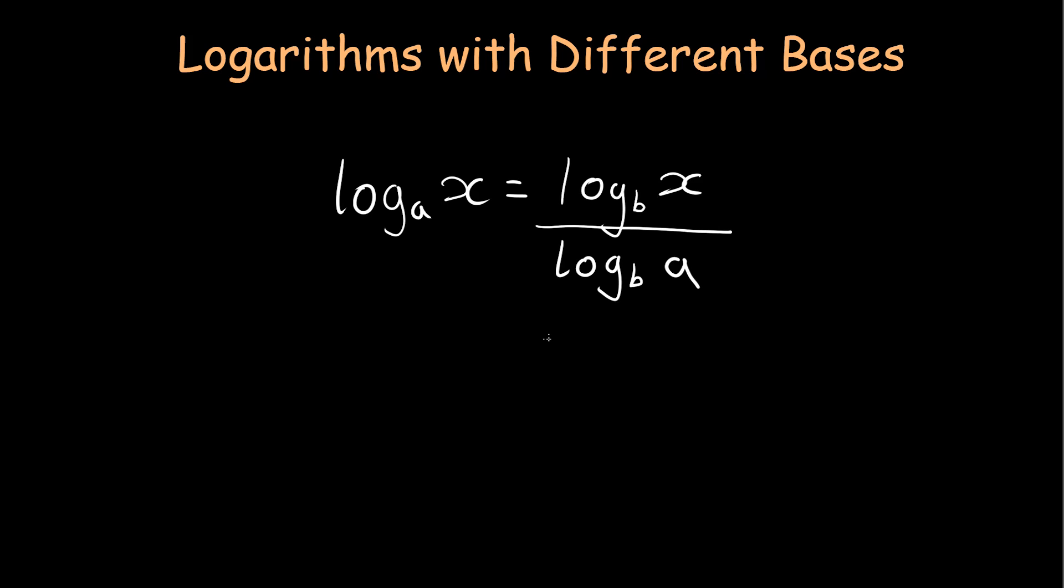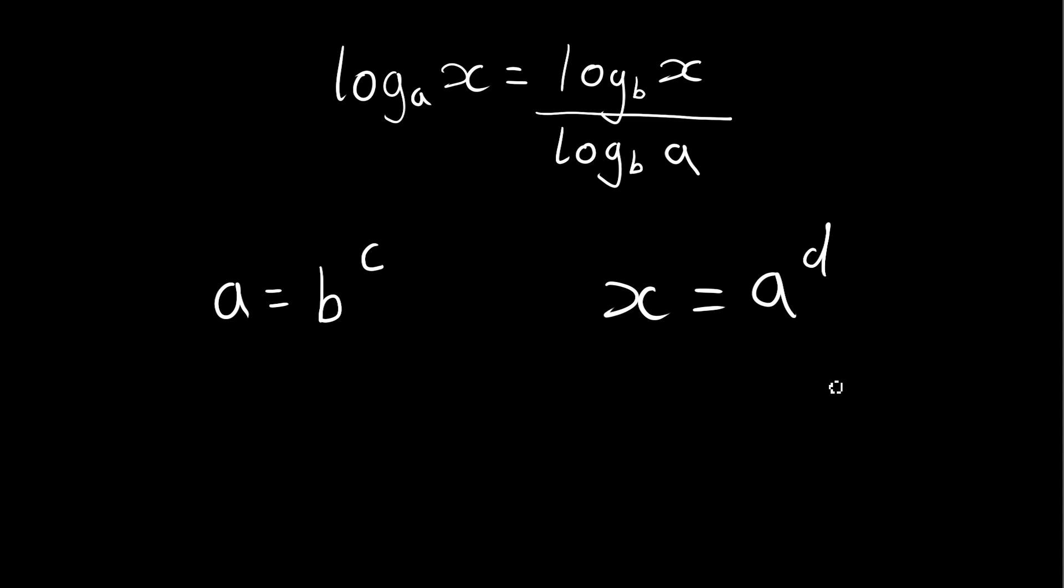So where does this formula actually come from? How can we derive this formula? Well we can start with two exponentials. We can have a equal to base b to the power of c, and we can have x equal to base a to the power of d. Now with these two exponentials, we can take their log. So here we have log of base b with the argument of a equal to c, and we have log base a with an argument of x equal to the power of d.